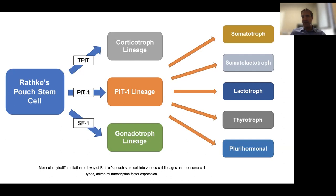The corticotroph lineage is driven by Tpit, and that is where ACTH tumors come from. There is also a type called silent corticotroph adenoma — these tumors are known to be more invasive, but they are non-secretory; they do not cause Cushing's disease and do not increase ACTH levels. Then there are the ACTH-secreting tumors.